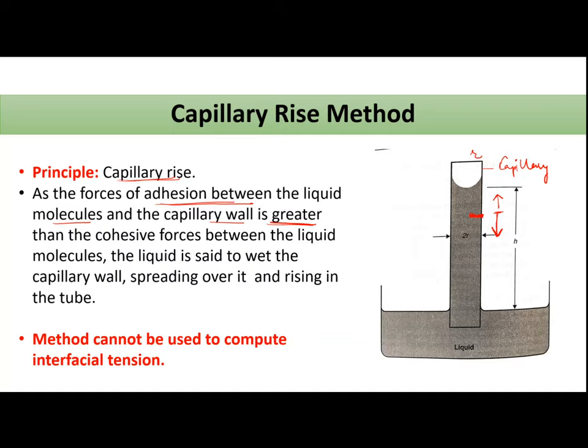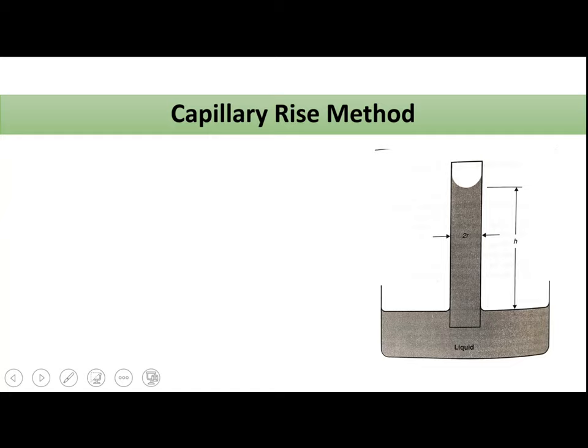Until that level, your liquid will rise in this capillary. So in this case, assume that h is the height where this balance exists. Jahan pe yeh upward force becomes equal to the downward force, toh maximum height jo usne attain ki that was h. So if we calculate the upward vertical component, that will be equal to surface tension multiplied by cos theta. Theta is the angle which the meniscus forms with the capillary wall. Here, this is your theta.